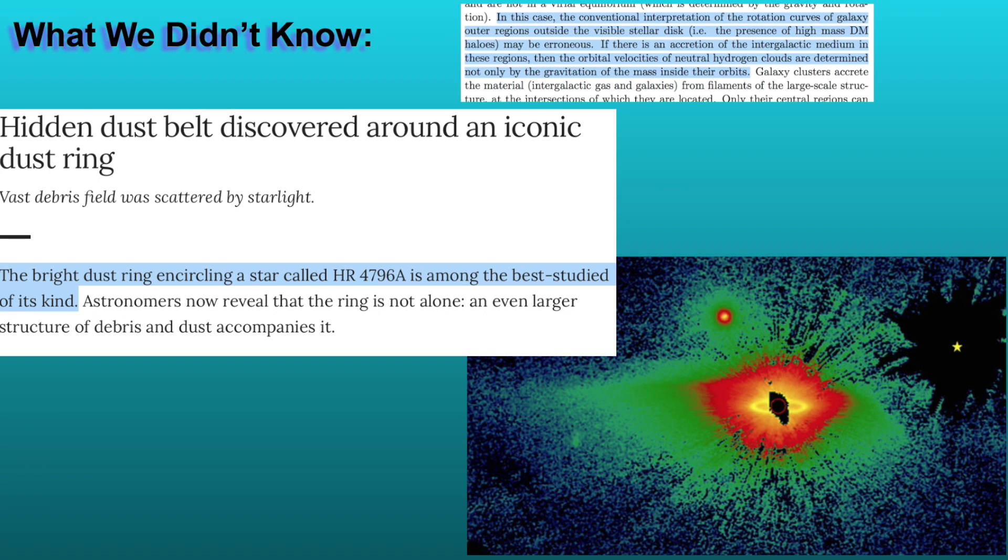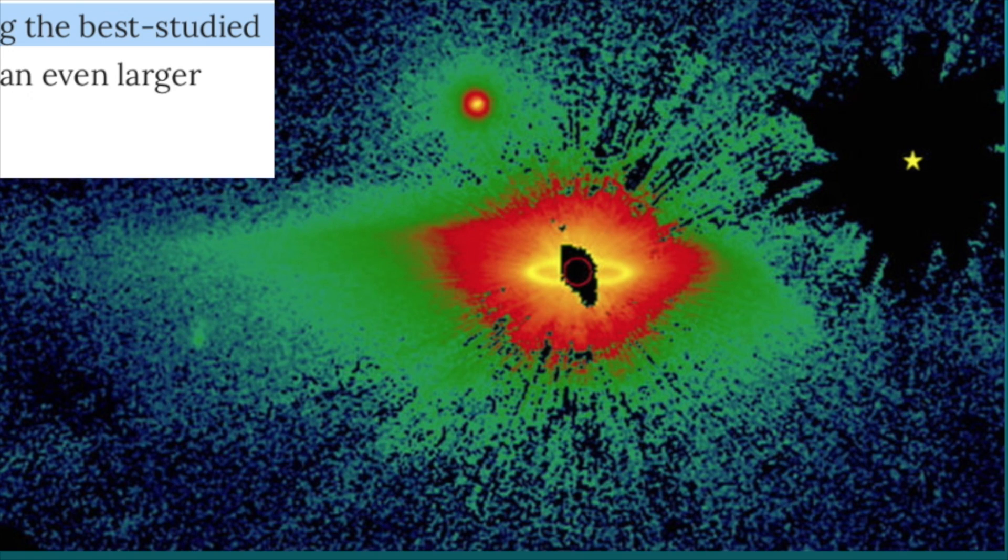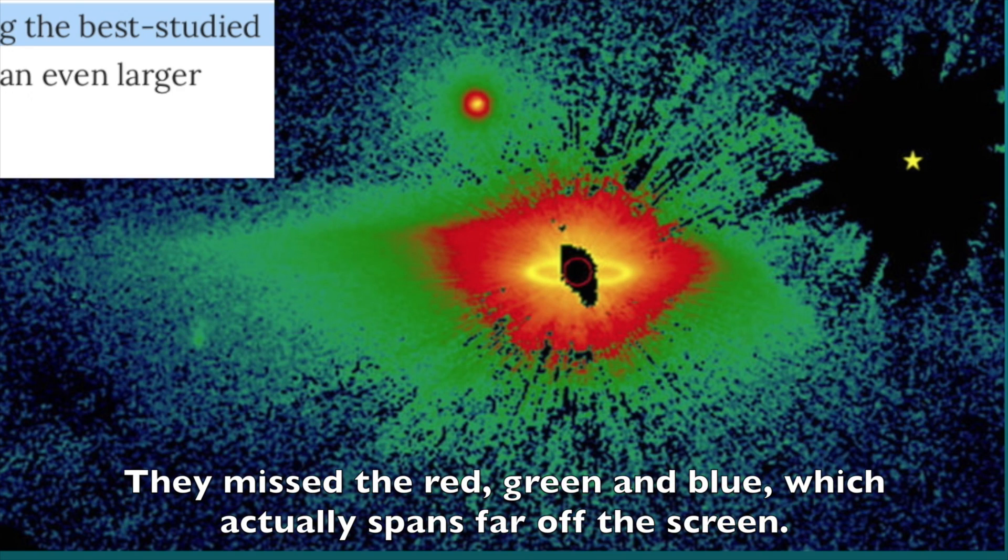HR 4796, the best studied dust ring of its kind. Not that that helped an enormous, thousand AU on both sides dust belt from being hidden from us until just about a month and a half ago. The most well-studied dust ring of its kind, and we didn't know that there was this enormous dust belt. That's the photo you've got after it.